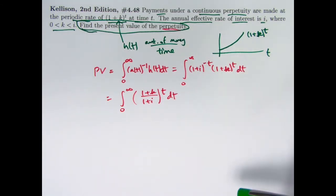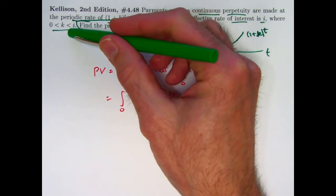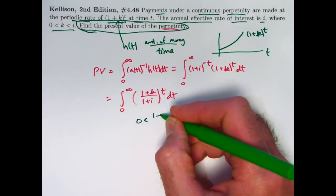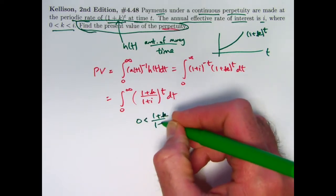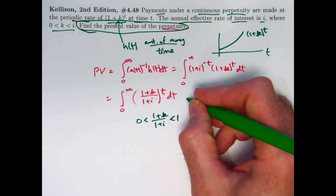This is an exponential decay function that we're integrating here. Because k is between 0 and i, 1 plus k over 1 plus i is going to be between 0 and 1. And therefore raising it to the t power gives an exponential decay function. This improper integral will converge to a finite quantity.